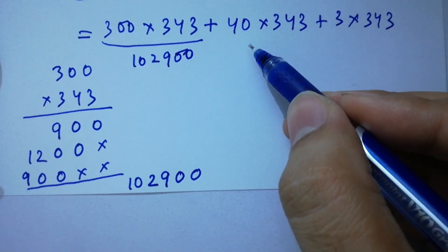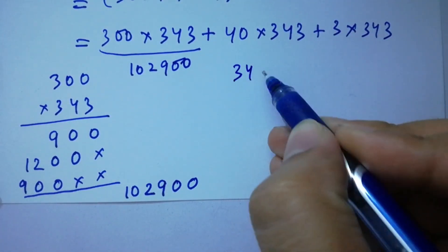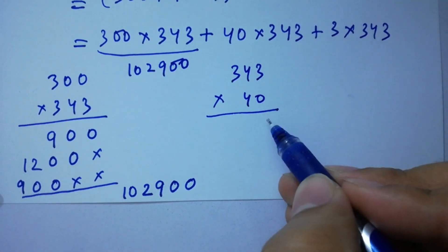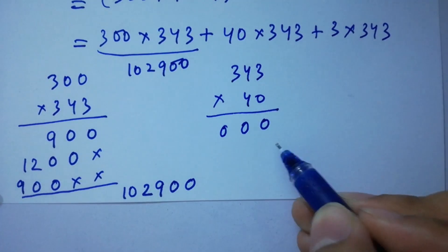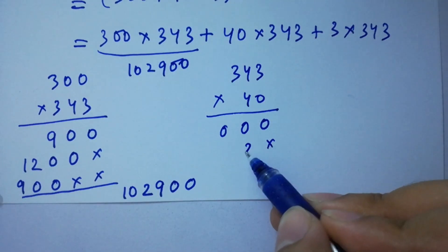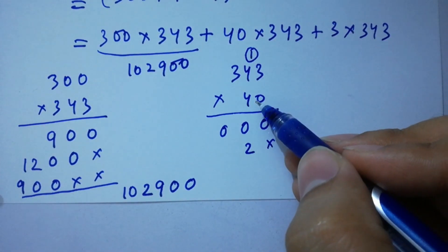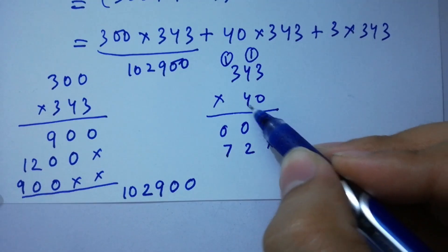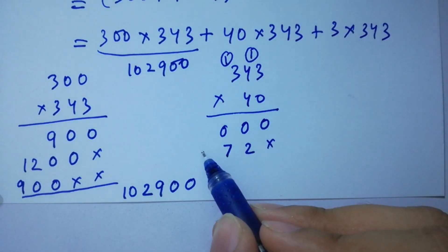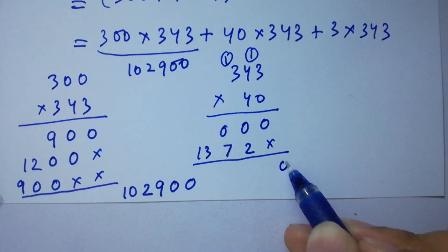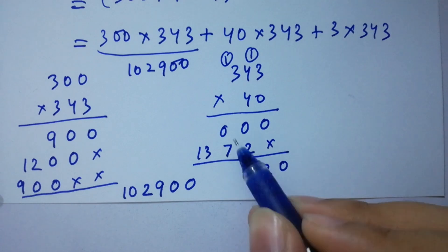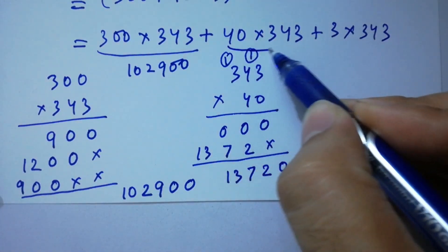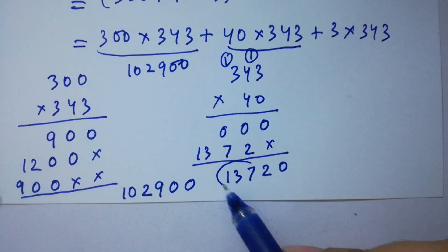Next, 40 times 343: 4 times 3 is 12 — write 2, carry 1; 4 times 4 is 16 plus 1 gives 17 — write 7, carry 1; 4 times 3 is 12 plus 1 gives 13. Adding the partial products, 40 times 343 equals 13,720.